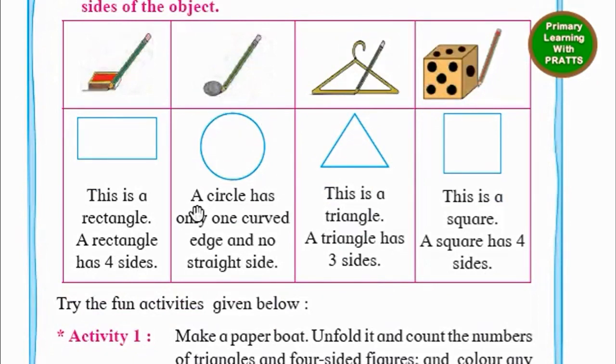When you trace it out, you get a circle. A circle has only one curved edge and no straight side.